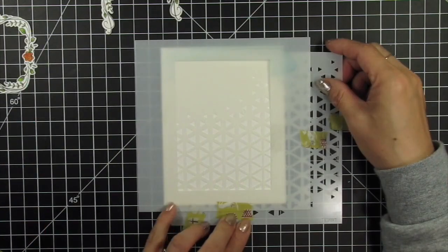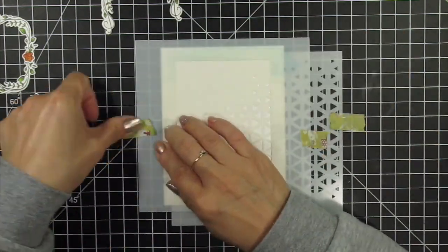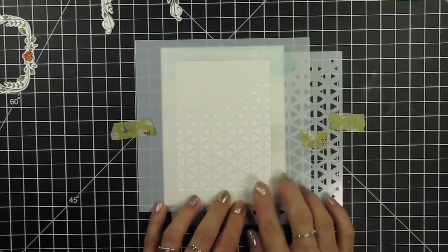With the Play the Angle stencil, I'll be using it in combination with the rectangle masking stencil, since I want to leave a white border around the panel.